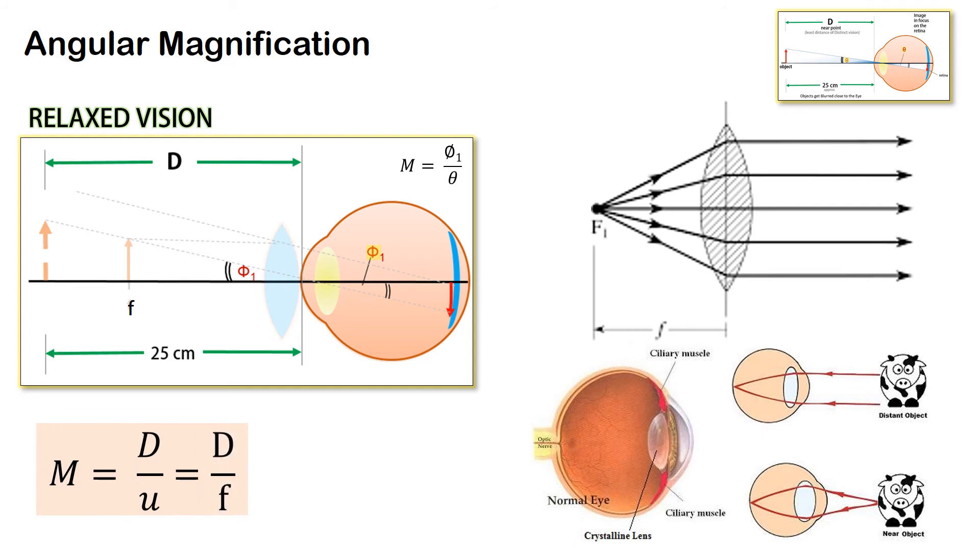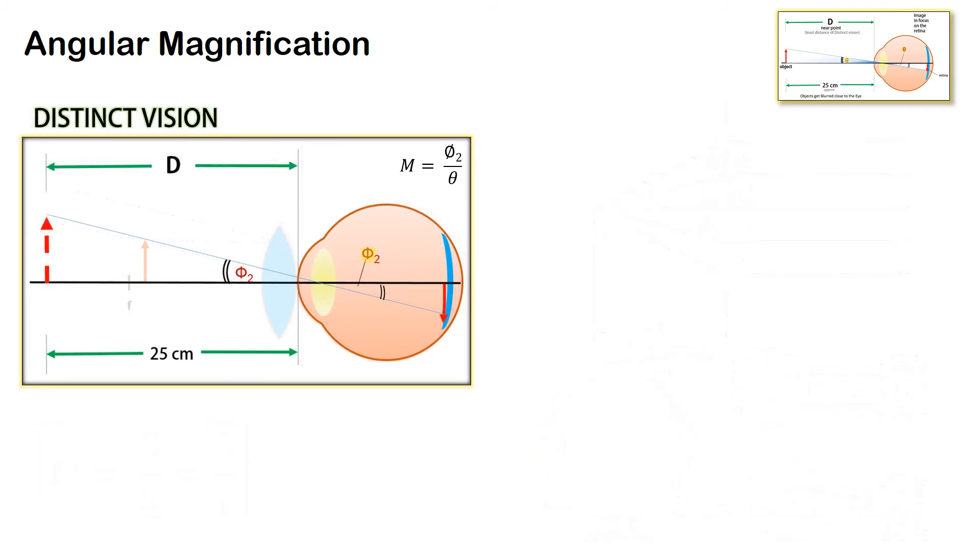Because the object is placed at focal length, the magnification is d upon f. In the case of distinct vision we find the value of u using the lens formula and we get magnification as 1 plus d upon f. So we get more magnification in this case but it is more strenuous to the eye.